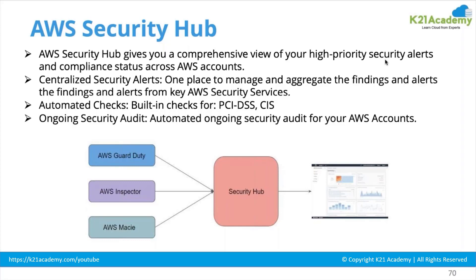Security Hub gives you a centralized place to manage and aggregate findings and alerts from key AWS security services. It also provides automated built-in checks for PCI DSS and CIS — these are data integrity and data security compliance standards that most companies use — as well as ongoing automated security audits for your AWS environment.